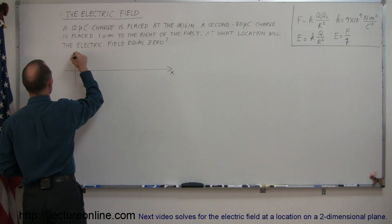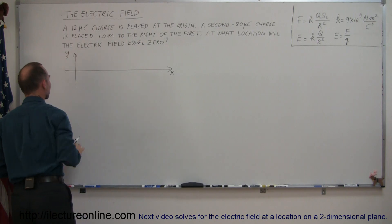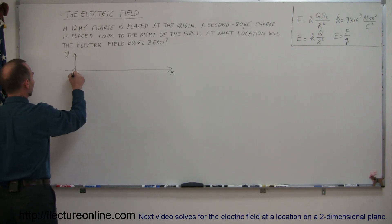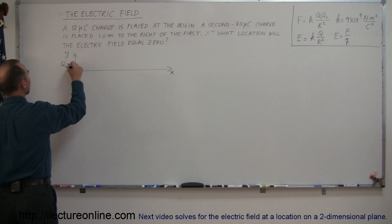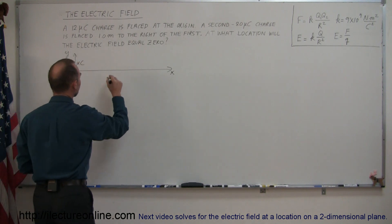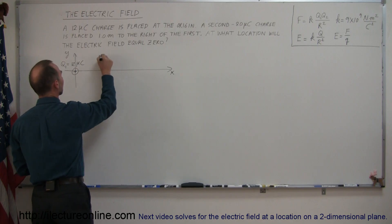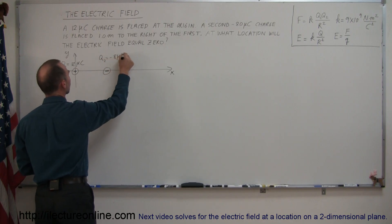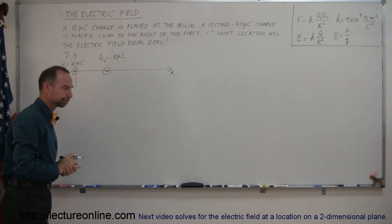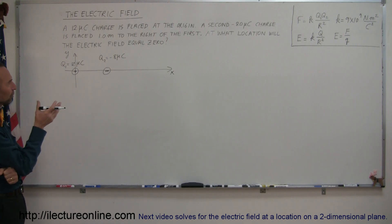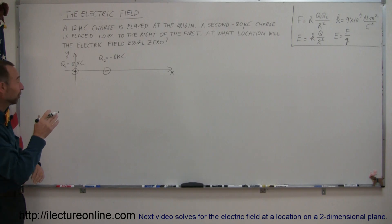There's your x-axis and there's your y-axis. I drew a short y-axis because everything is going to be on the x-axis. Here's our first charge — it's a positive charge, Q1, equal to 12 microcoulombs. One meter to the right is a negative charge, Q2, equal to minus 8 microcoulombs. Now we try to figure out where we need to go from here — we're looking for a location where the electric field will be zero.